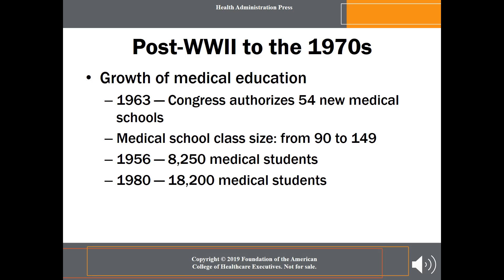In the 1960s, Congress passed the Health Education Facilities Act that started a stream of funding to open 54 medical schools before federal appropriations ended in 1980. To further address the perceived shortage of doctors, enrollment in existing schools went from an average of 90 per class to 149. Subsequently, by 1980, there were 18,200 students in medical school compared to only 8,000 in 1956.